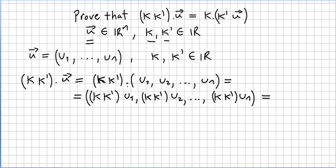According to the definition of scalar multiplication, because k times k' is still a scalar, we are going to multiply that scalar times each component. So it will be (kk' times u1, kk' times u2, ..., kk' times un).